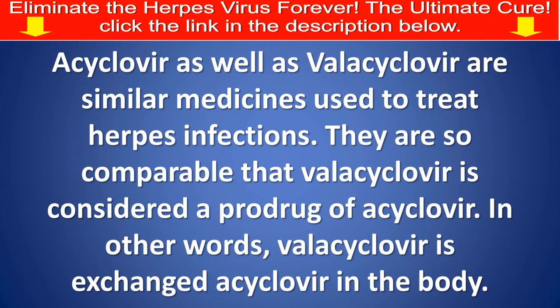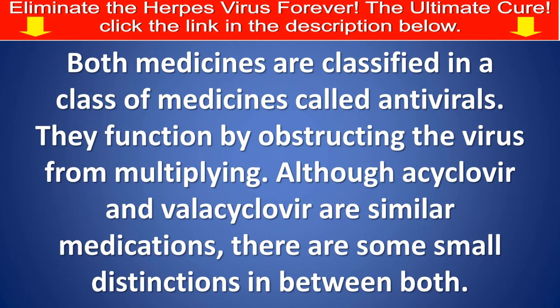Acyclovir as well as valacyclovir are similar medicines used to treat herpes infections. They are so comparable that valacyclovir is considered a prodrug of acyclovir — in other words, valacyclovir is converted into acyclovir in the body. Both medicines are classified as antivirals, and they function by obstructing the virus from multiplying.